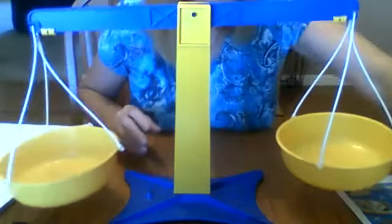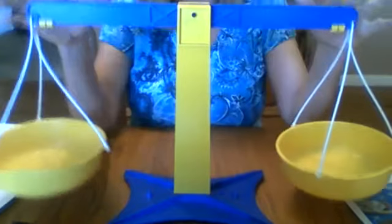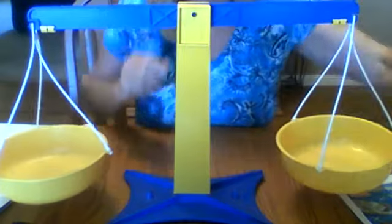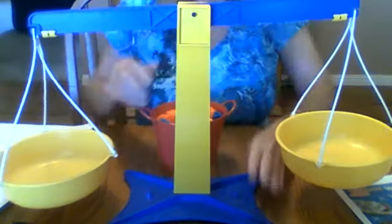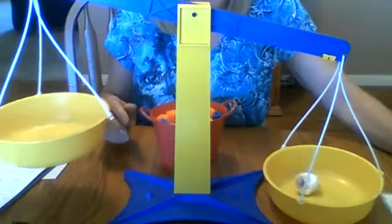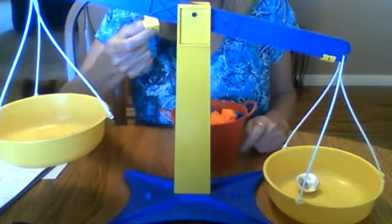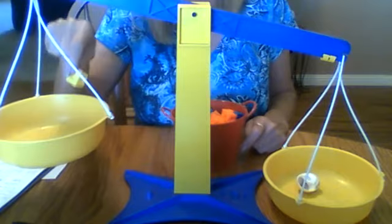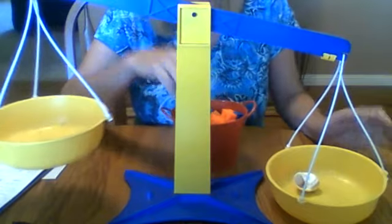So we talked about objects that are heavy and objects that are light. Now we're going to use this scale to try to make both sides equal. I'm going to use some other objects as well as some cubes. I'll show you how to do it. I'm going to take my seashell. Now I'm going to take cubes and put them on this side. I'm going to count how many cubes it takes to balance the scale and make it equal. I want you to count with me, okay?